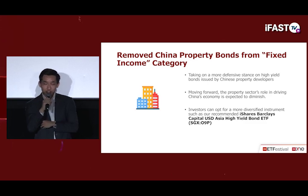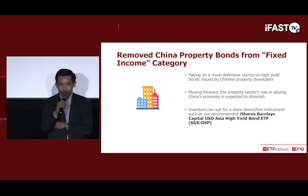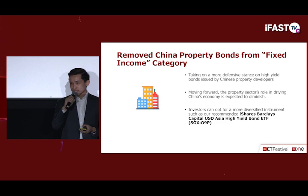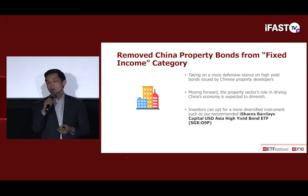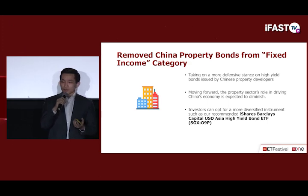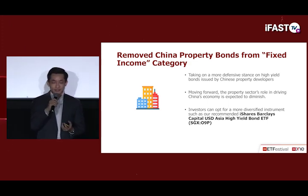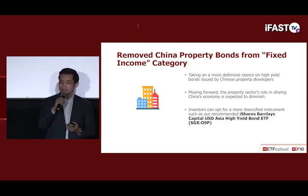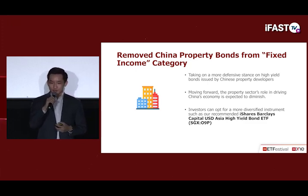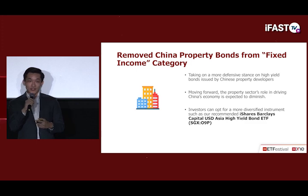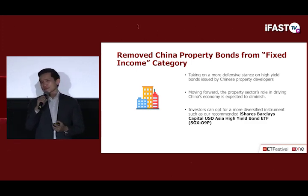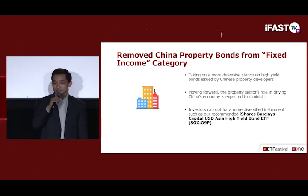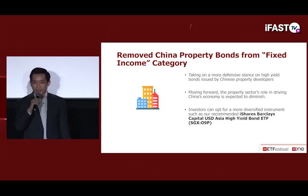Moving on to the fixed income category, we have removed the China property bonds subcategory. We have taken a more defensive stance on high-yield bonds issued by Chinese property developers. The property sector's role in driving China's economy is expected to diminish. Coupled with weak liquidity profiles and the authorities' tough stance on the sector, we believe there may be substantial risk in ETFs focused solely on China property bonds. Investors who still wish to gain exposure may opt for a more diversified instrument such as the iShares Barclays Capital Asia High Yield Bond Index ETF.